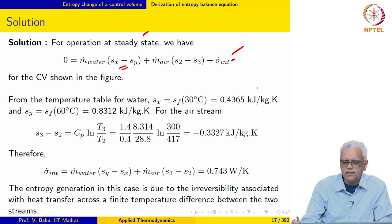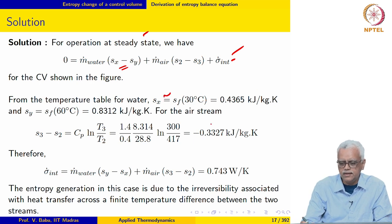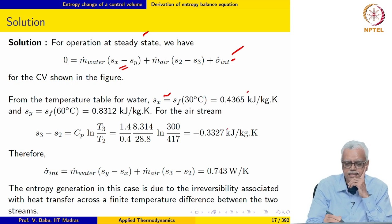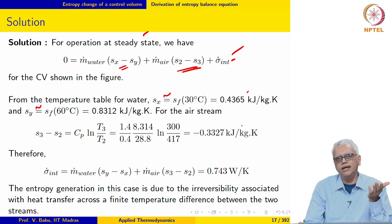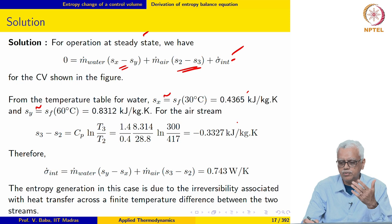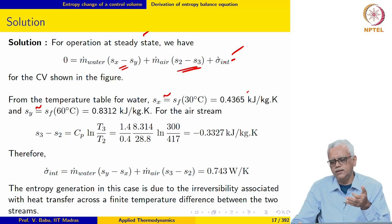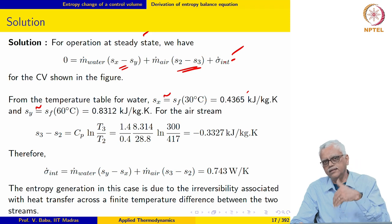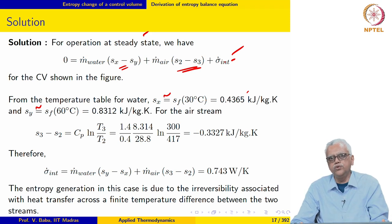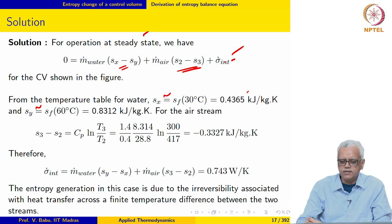For water, we retrieve the specific entropy values from the steam table, approximating S_x as S_f at 30°C and S_y as S_f at 60°C. For the air stream, ΔS may be evaluated from the T-dS relations. Since pressure remains constant, we write ΔS_air = C_p × ln(T_2/T_1) − R × ln(P_2/P_1). Since there is no change in pressure, that term drops out.